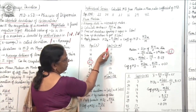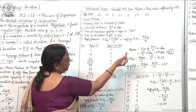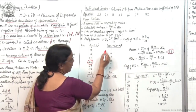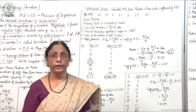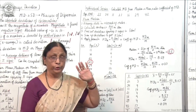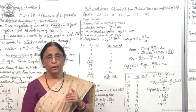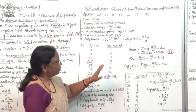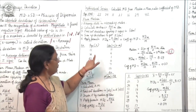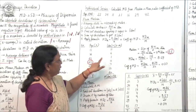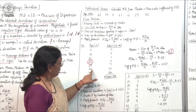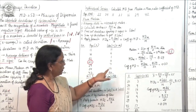Now take deviations from median (22), ignoring minus signs. 11 − 22 = 11, 16 − 22 = 6, 21 − 22 = 1, 22 − 22 = 0, 29 − 22 = 7, 34 − 22 = 12, 42 − 22 = 20. Remember: do not write minus signs here — all values are absolute values.